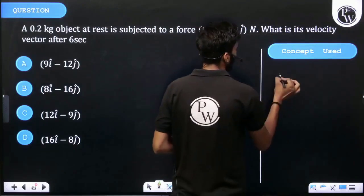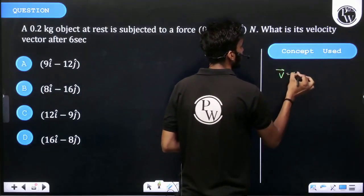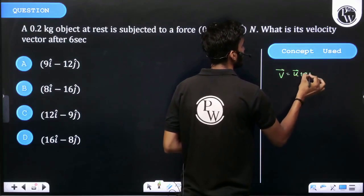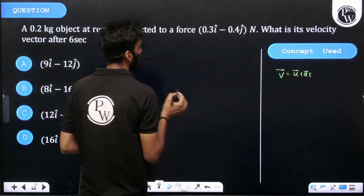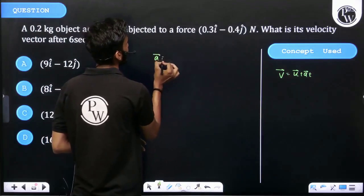We know that V vector is equal to U vector plus A into T. Then acceleration is equal to F by M.